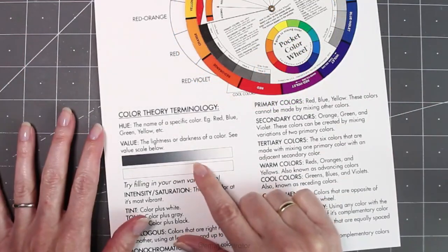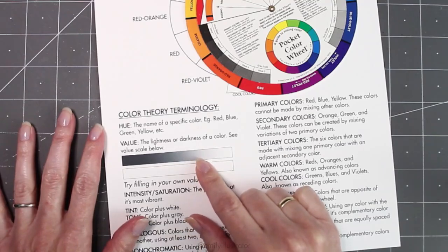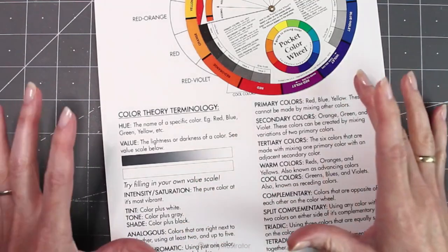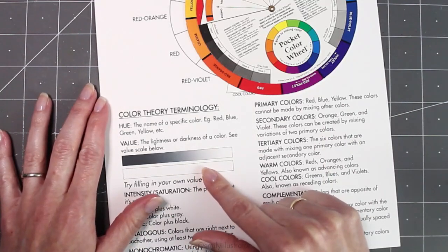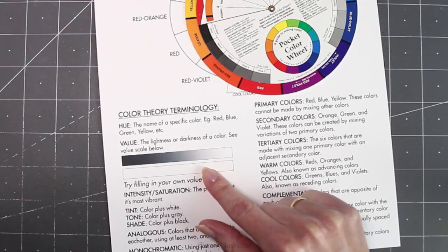Next is value. Value is the light and dark variations of each color. This is a scale of black and white value. There is also an empty black and white block for you to fill in and try your own value variation. Let's go ahead and fill in this one right now.